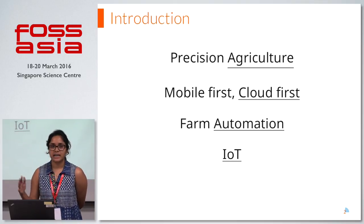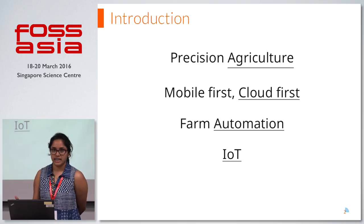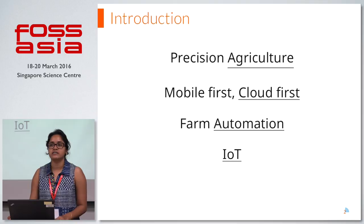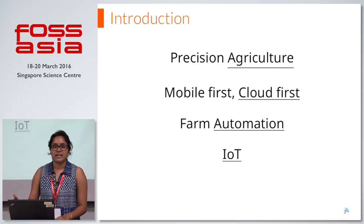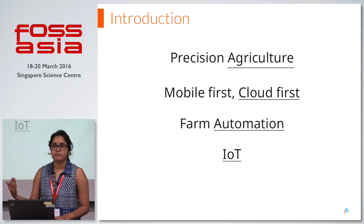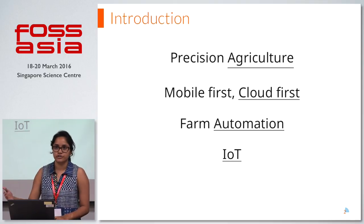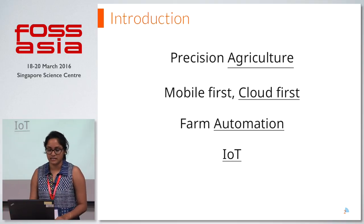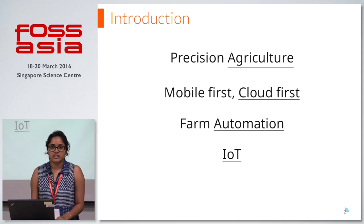The main aim of this project is to have precision agriculture, which means basically focusing on farm management concepts like observing and providing the necessary nutrients to the farm fields and other necessary things. And secondly, mobile first and cloud first.